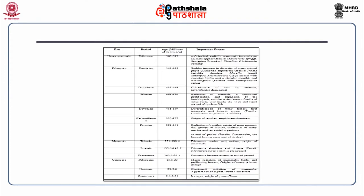The Mesozoic era is divided into Triassic, Jurassic and Cretaceous periods. The Triassic period saw evolution and radiation of dinosaurs and the origin of mammals. In the Jurassic period, dinosaurs were abundant and diversified. In the Cretaceous period, dinosaurs became extinct at the end. Finally, the Cenozoic era is divided into Paleogene, Neogene and Quaternary periods. During the Paleogene period, major radiation of mammals, birds and pollinating insects took place, and origins of many primate groups occurred. In the Neogene period, continuous radiation of animals and appearance of bipedal human ancestors occurred. In the Quaternary period, ice ages occurred and the genus Homo originated.